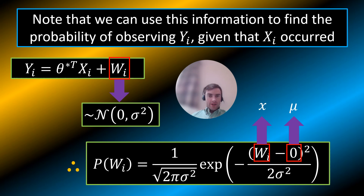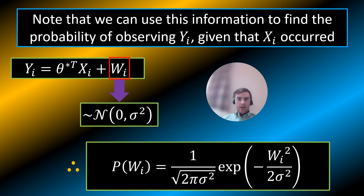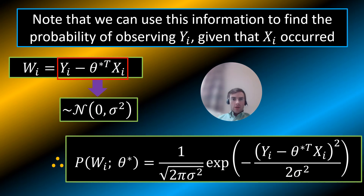Since wi is drawn from a normal distribution with mean 0 and standard deviation sigma squared, the probability of wi equals that Gaussian expression, where wi is the value, the mean is 0, and the standard deviation is sigma. We can then rearrange and say that wi equals yi minus theta star transpose times xi.